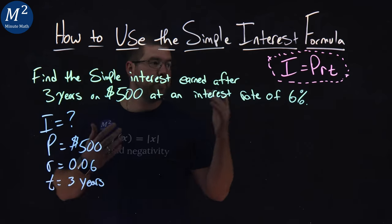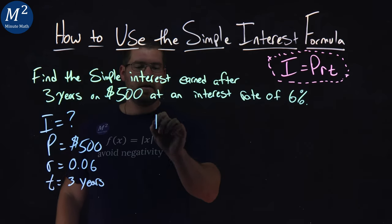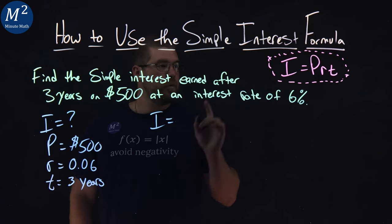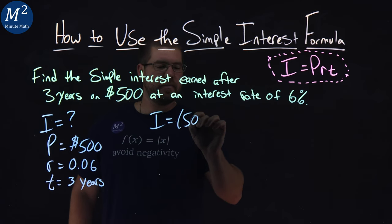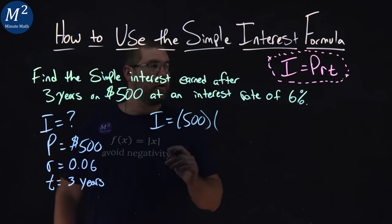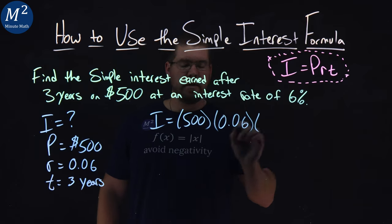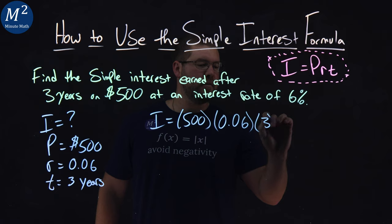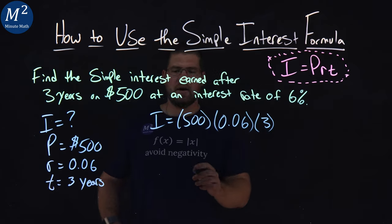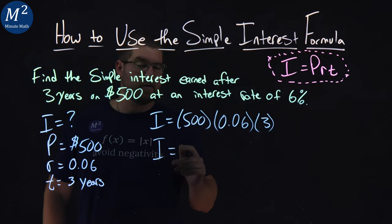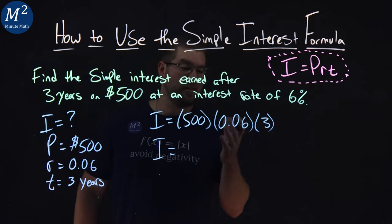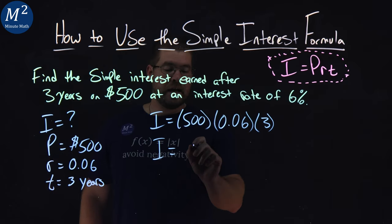All right, so we use our formula, and we're going to plug this in. I equals our principal, 500, times our rate, 0.06. Remember, it's a decimal, and our time is three years. So now we need to multiply this out. And when we do that, our calculator comes out to be 90.